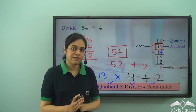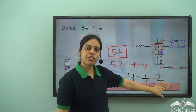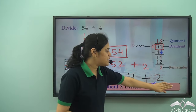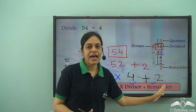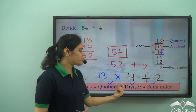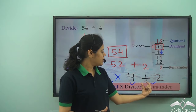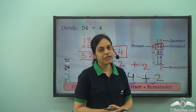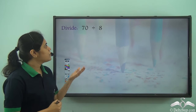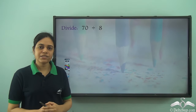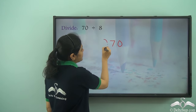For any division this always holds true. Even if the remainder is 0, this part goes away because adding 0 means adding nothing. In that case, dividend will be equal to quotient into divisor. But if we have a remainder, I also add the remainder to get my dividend. Now let us divide 70 divided by 8.